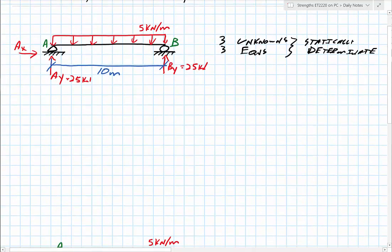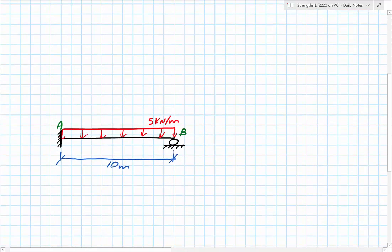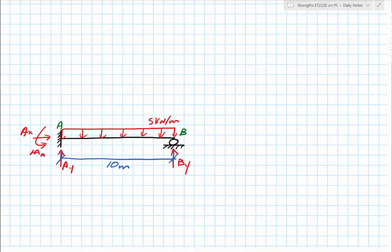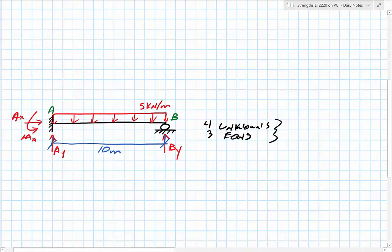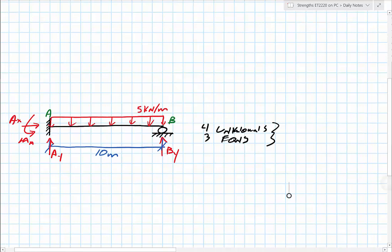But the question would be, what if I took that exact same scenario, and the only thing I did was replace the reaction at A with a fixed support. Now, if I look at how many unknowns I have, I would have the same BY, AY, and Ax. The only difference is, because it's a rigid support, I could also have a moment at A, so I have four unknowns, and I have three equations. And we call this statically indeterminate to the first degree, or we could say we have one redundancy, one extra reaction that we actually don't need to be there.